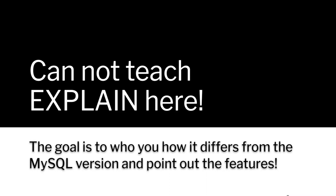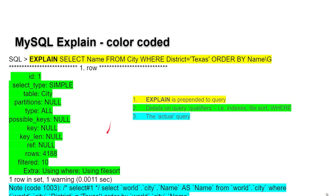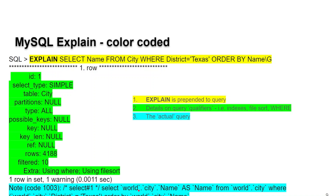I can't fully teach the mechanics of Explain — that's much more than a short video can cover. My goal here is just to show you the difference between what MySQL does and what Postgres does. In the MySQL world, we're used to prepending the keyword EXPLAIN in front of a query. Here's a simple query: SELECT name FROM city WHERE district equals Texas, ORDER BY name. In the green area, we get some details — the optimizer's checklist for how it can go and retrieve data. It knows we're working on the table city, checks for any keys, finds none, and knows there are 4,188 rows. In the teal area, this is the actual query that MySQL ran, including the database name, table name, and column name being pulled back.